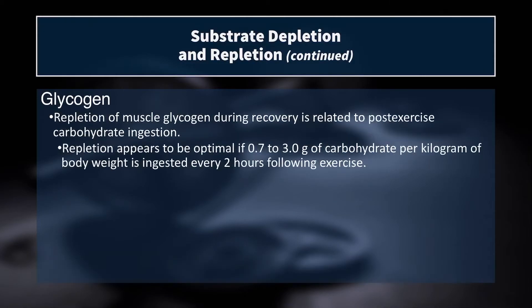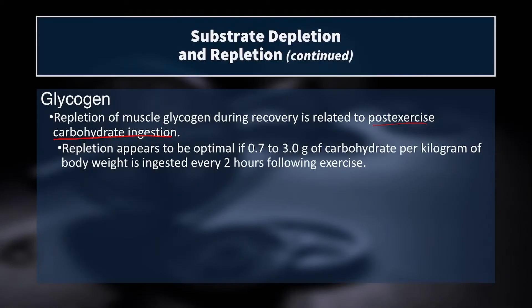So how do we recover that glycogen? We recover it through subsequent feeding and post-exercise carbohydrate ingestion — eating and drinking carbs. As soon as you're done exercising, whether a soccer match, a voluminous weight training session, or an endurance run, you want to begin repleting your muscle glycogen by consuming carbohydrates. It appears that somewhere between 0.7 to 3 grams of carbohydrate per kilogram of body weight ingested every two hours is optimal.